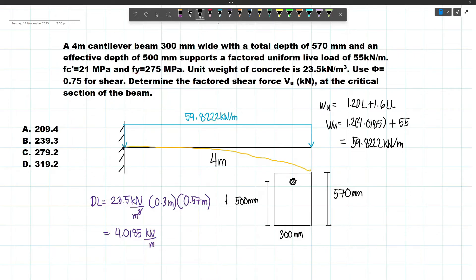This is our support and this is our distance d. Let's get the shear at this point at a distance d from the support. Our d is 500 millimeters or 0.5 meters. Let's make a cut here and solve for the shear at this point.